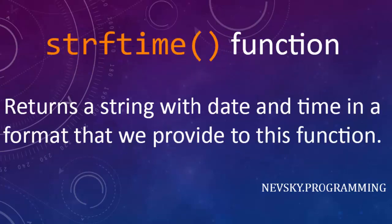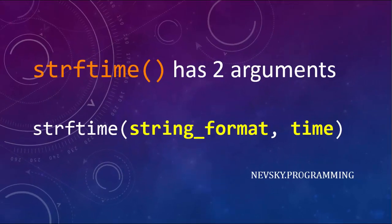Before we start working with this function, I want to say a few words about it. The strftime function returns a string with date and time in a format that we provide. So this function is going to return a string containing date and time presented in the format that we want. This function has two arguments: the first argument is for the string format, and the second argument is time.